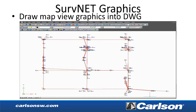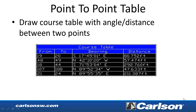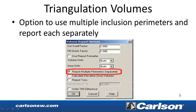For SurvNet, there is now an option to draw the network points and line work. There's a new point-to-point table command that draws a course table with the angle and distance between two points. For triangulation volumes, there's a new option to report volume separately for multiple perimeters — for example, a site with separate polylines for different stockpiles, where you select two surfaces and all those polylines and report the volumes separately.